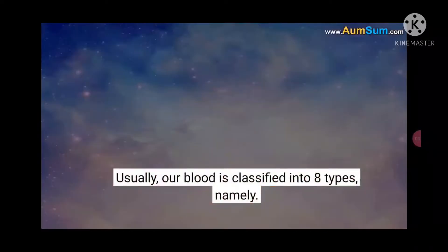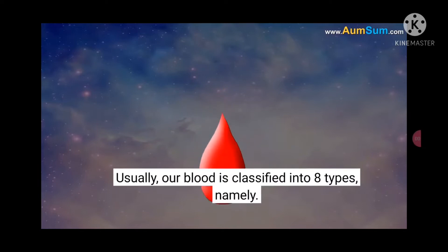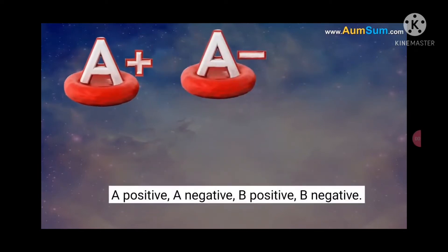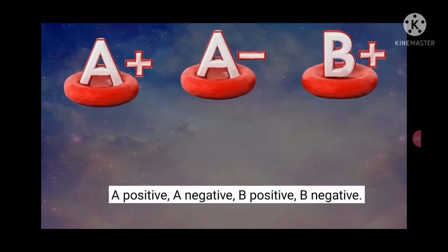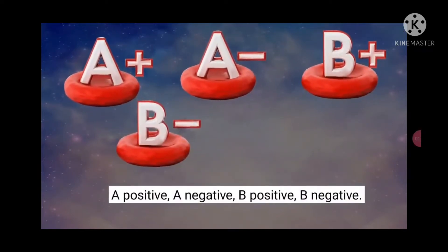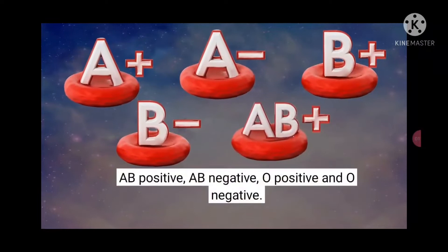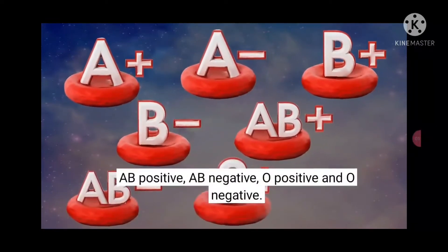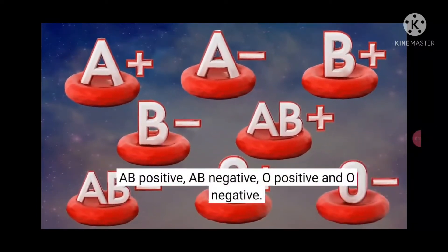Usually, our blood is classified into eight types: A positive, A negative, B positive, B negative, AB positive, AB negative, O positive, and O negative.